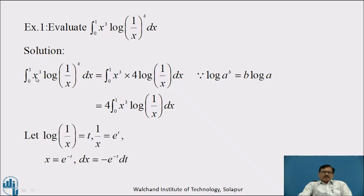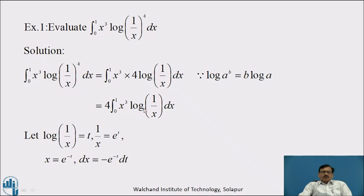We can write integration from 0 to 1 of x cube into log of 1 by x raised to 4 dx as equal to integration from 0 to 1 of x cube into 4 log of 1 by x dx, since log of a raised to b equals b log a. Which is equal to 4 into integration from 0 to 1 of x cube log of 1 by x dx.